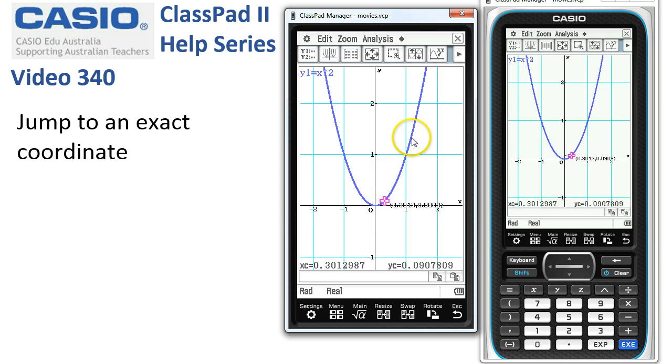So how do we get to exactly 1.1? Well, it's pretty easy. When we are in trace mode—remember, we've either tapped analysis trace, or we've tapped onto this icon here, the x, y one.